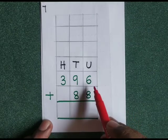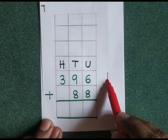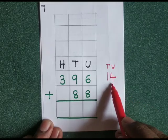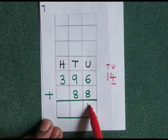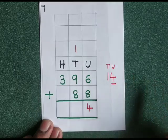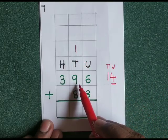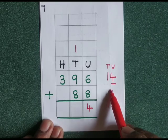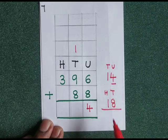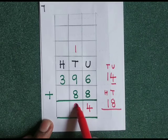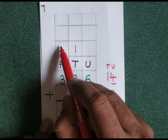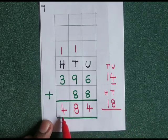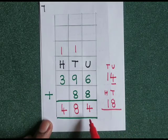396 plus 88. 6 plus 8 is equal to 14. Write 4 at the units place, carry 1 at the tens place. 1 plus 9 is 10, 10 plus 8 is 18. Write 8 at the tens place, carry 1. 1 plus 3 is 4. 484 is the answer.